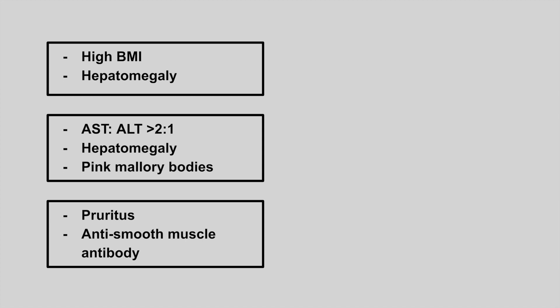The first patient is going to have a high BMI with hepatomegaly. This is hepatic steatosis, also called non-alcoholic fatty liver disease. Look out for patients who are obese and have a lot of adipocytes inside the liver.